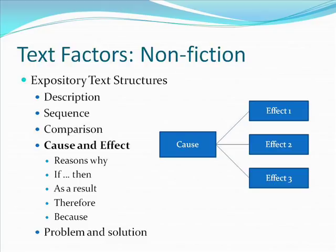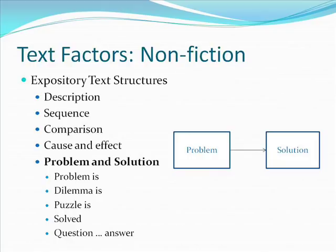In problem and solution text structures, the author states a problem and offers one or more solutions. A variation is the question and answer format, in which the writer poses a question and then answers it. Cue words and phrases include 'the problem is,' 'the puzzle is,' 'solve,' and 'question-answer.' Pictured is a graphic organizer best used with this text structure.